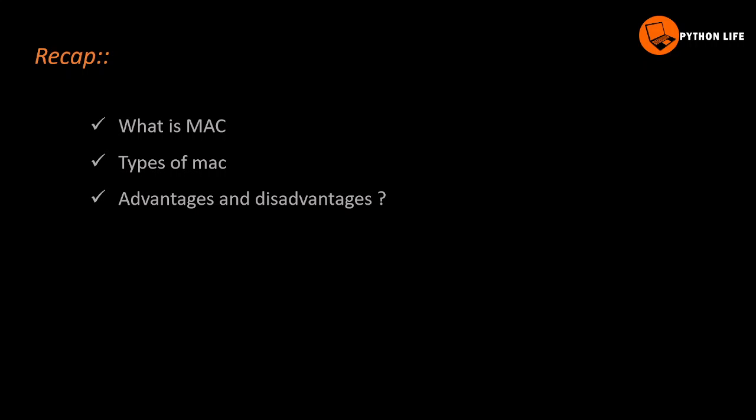Hi, welcome to Python Life. Let's recap the previous topic. In the previous topic, MAC - Medium Access Control - types were used as examples. Types include Aloha, CSMA, Channelization, and Control MAC.